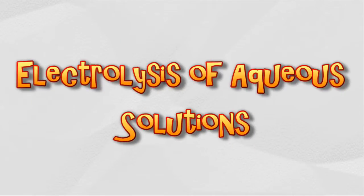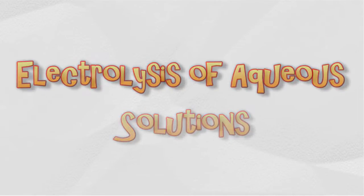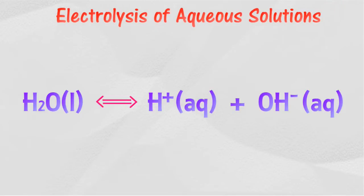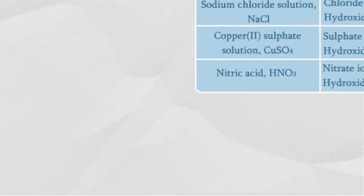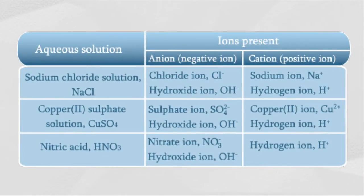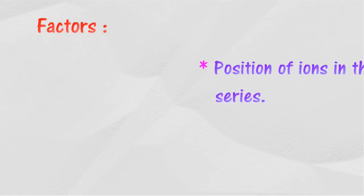In the electrolysis of aqueous solutions, water molecules slightly dissociate to produce hydrogen ions and hydroxide ions. Thus, aqueous solutions contain hydrogen ions and hydroxide ions besides the electrolyte ions. The table shows the content of cations and anions in several types of aqueous solutions. The choice of ion to be discharged depends on the position of ions in the electrochemical series, the concentration of ions, and the types of electrodes.